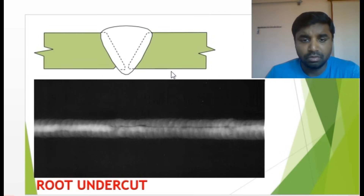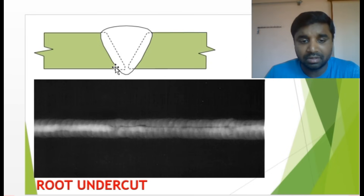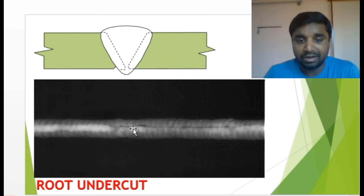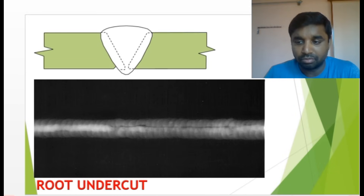Root undercut — we have done the welding but in the root area, excessive amperage and excessive current caused undercut. How does root undercut look in the radiography image? You will see one black line coming from the root line — it is not on the face or the toe, it is specifically root undercut. A black line runs from beginning to end along the root line. That is called root undercut.